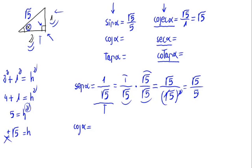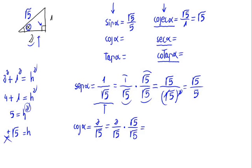Now let's calculate the cosine of alpha. It is the adjacent leg — that is, the leg that touches alpha — divided by the hypotenuse, the square root of 5. Rationalizing: 2 divided by the square root of 5, times the square root of 5 over the square root of 5, gives 2 times the square root of 5 divided by 5. The root and square cancel, leaving 2 times the square root of 5 divided by 5.